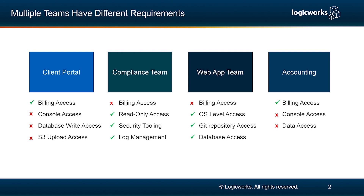At every company, multiple teams are going to have different requirements — for whatever the team is, for whatever the access requirements are for the employees and the engineers. For example, if you have a different team for compliance, for web applications, for accounting and a client portal, each one of them is going to have different requirements for access. We don't want to give your compliance team or your accounting team access to your databases or your Git repositories, and similarly we don't want to give your application developer teams billing access. So how do you actually manage the access requirements in your environment?